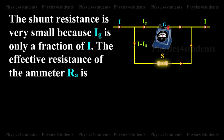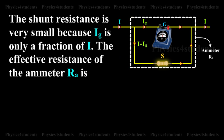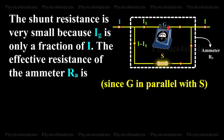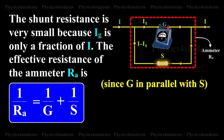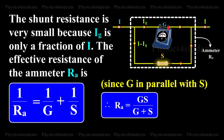The shunt resistance is very small because IG is only a fraction of I. The effective resistance of the ammeter RA is G in parallel with S. 1 by RA is equal to 1 by G plus 1 by S. RA is equal to GS divided by G plus S.